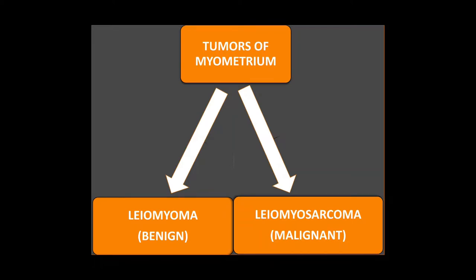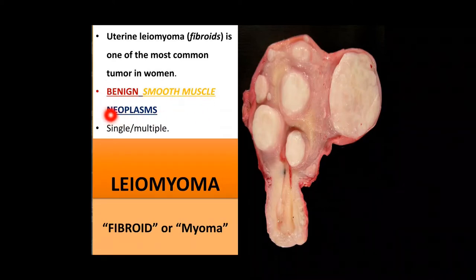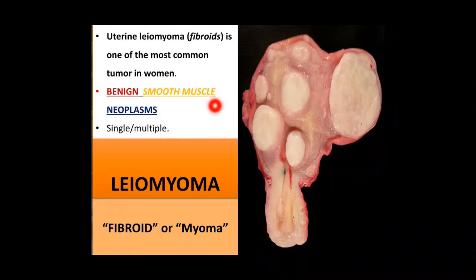Tumors of the myometrium are divided into two categories: benign tumors called leiomyomas, and malignant tumors called leiomyosarcomas. A benign tumor arising from smooth muscle cells anywhere in the body is called a leiomyoma; in the uterus it is called uterine leiomyoma. Uterine leiomyoma, commonly called a fibroid, is one of the most common tumors in women. It is a benign, well-encapsulated smooth muscle neoplasm arising from the myometrium.